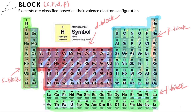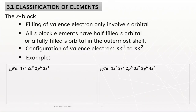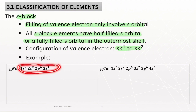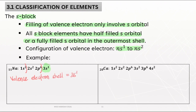Elements in a block are classified based on their valence electron configuration. For the S block, the filling of valence electrons only involves S orbitals. All S block elements have a half-filled or fully filled S orbital in the outermost shell, with configuration NS1 to NS2. For sodium 11, the valence electron shell is 3S1, which is a half-filled S orbital, so sodium is located at the S block.